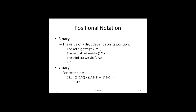Now let us apply the same principles of positional notation to a binary number. The value of a digit in a binary number depends on its position. The last digit, or least significant bit, weighs 2 to the 0. The second last weighs 2 to the 1, and the third last weighs 2 to the 2 — which happen to be 1, 2, and 4 respectively.